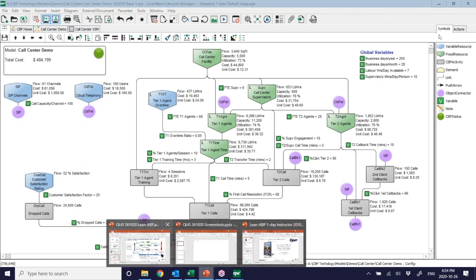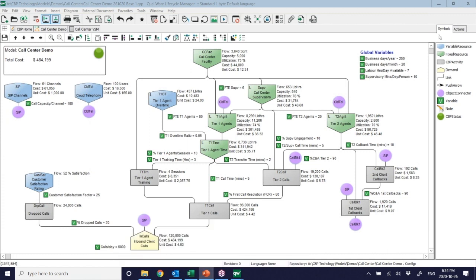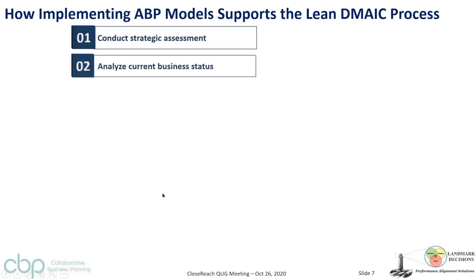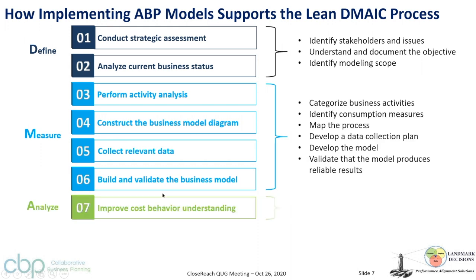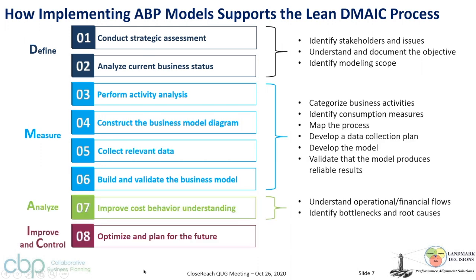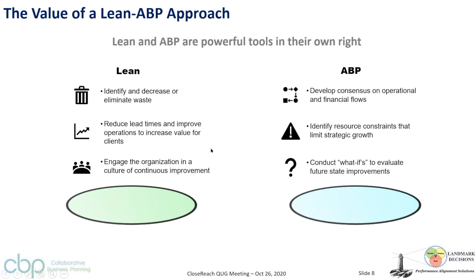Jumping back to the presentation: there is an eight-step methodology we typically use for implementing activity-based planning models. These overlap very nicely with the classic DMAIC process: Define, Measure, Analyze, Improve, and Control. This methodology walks you through building those models to reach the point where you can optimize and plan for the future around your business processes.